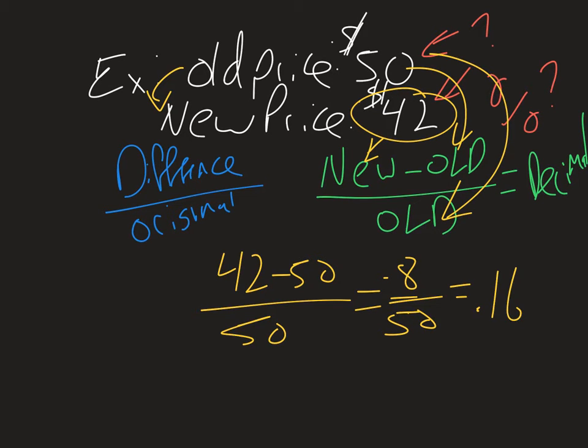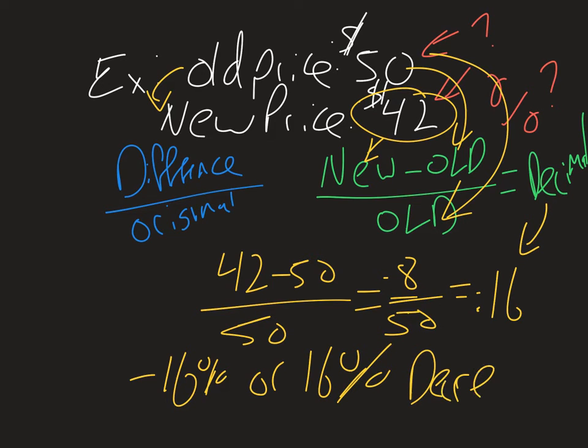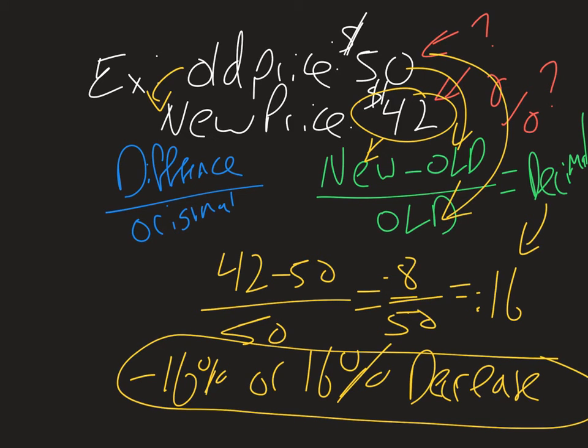Now remember, this is a decimal. So we have to convert it to a percentage. So this would be either you could say negative 16% or there's a 16% decrease. And that's how we would find percent of change.